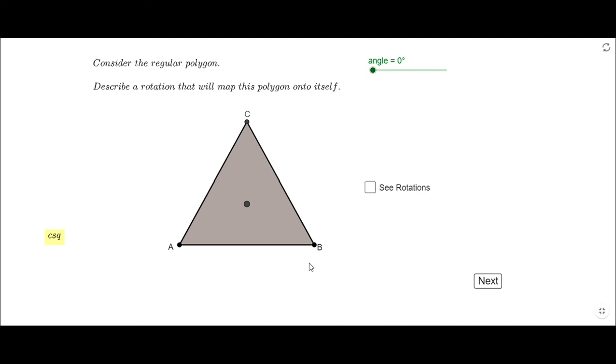I'm going to use this slider and if you notice, once I get to 120°, point A is right here, so it moved to B, B moved here, and C replaced A. So that is one way to rotate this polygon to be on top of itself.